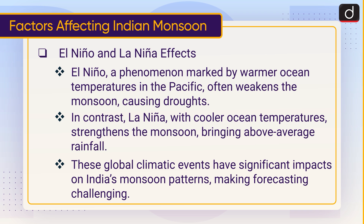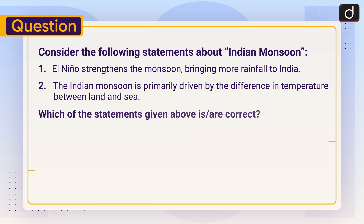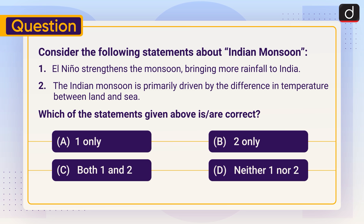Now it is time for a practice question. Consider the following statements about the Indian monsoon. Statement 1: El Niño strengthens the monsoon, bringing more rainfall to India. Statement 2: The Indian monsoon is primarily driven by the difference in temperature between land and sea. Which of the statements given above is or are correct? A. One only. B. Two only. C. Both one and two. D. Neither one nor two. The answer is B — Two only.